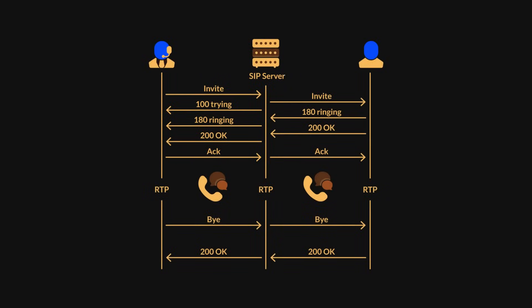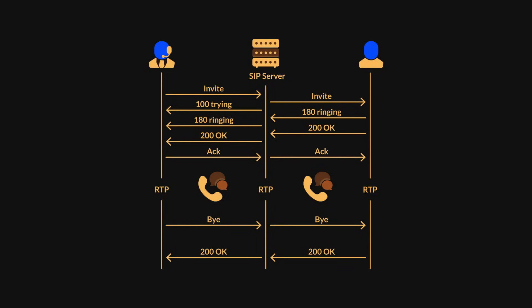Let's break down how VoIP works. When a call is made using VoIP, the SIP protocol kicks in first. The process starts with the caller sending an invite message to the recipient. The recipient then sends a 200 OK response to accept the call. Finally, the caller sends an ACK message, indicating that the call setup is complete. This is called a handshake. Once this handshake is complete, the RTP protocol takes over. RTP is responsible for transferring the voice data between the two parties. If hackers can capture these RTP packets, they can listen in on the conversation.